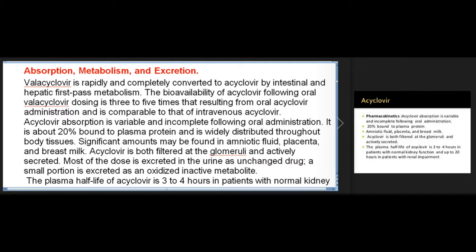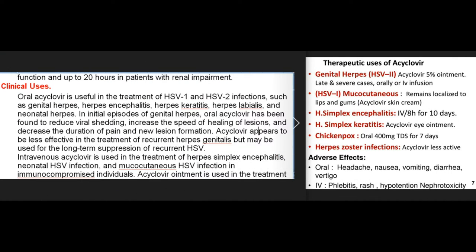Absorption, metabolism, and excretion: Valacyclovir is rapidly and completely converted to acyclovir by intestinal and hepatic first-pass metabolism. The bioavailability of acyclovir following oral valacyclovir dosing is three to five times that resulting from oral acyclovir administration and is comparable to that of intravenous acyclovir. Acyclovir absorption is variable and incomplete following oral administration; it is about 20% bound to plasma protein and is widely distributed throughout body tissues. Significant amounts may be found in amniotic fluid, placenta, and breast milk. Acyclovir is both filtered at the glomeruli and actively secreted, and most of the dose is excreted in the urine as unchanged drug. The plasma half-life of acyclovir is three to four hours in patients with normal kidney function and up to 20 hours in patients with renal impairment.